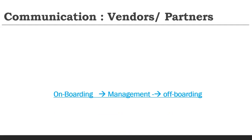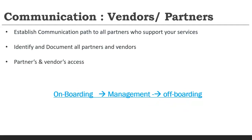The CCSP also asks about the communication path with vendors — this is an easy question but if you don't know it, you won't be able to answer. The vendor management path is: onboarding, management, and operating. Communication with vendors is very important because they are the backbone of your business. You should establish a proper communication path with all partners, identify and document all partner and vendor information, maintain access-related information, and set up emergency communication protocols and key stakeholder information.